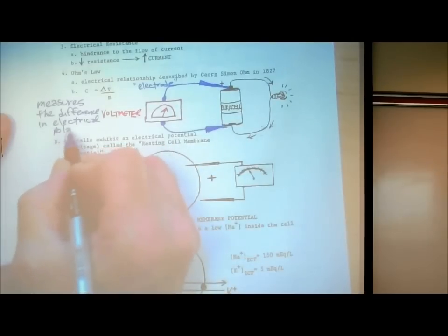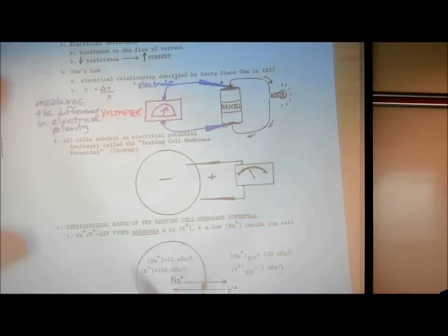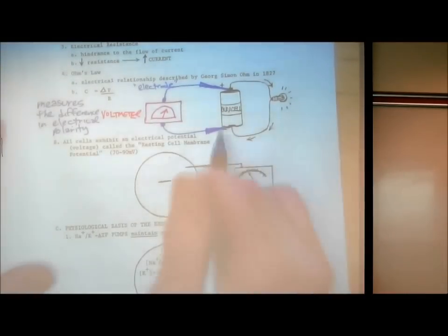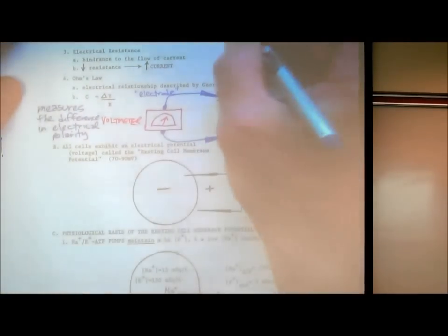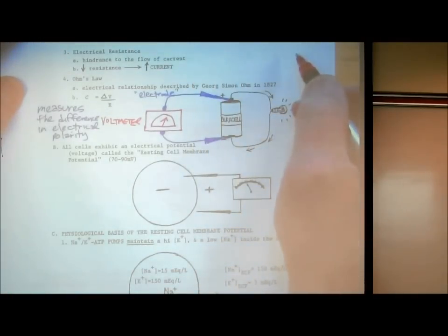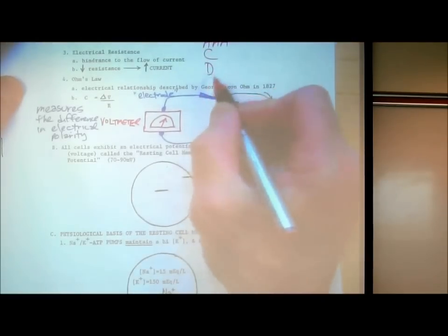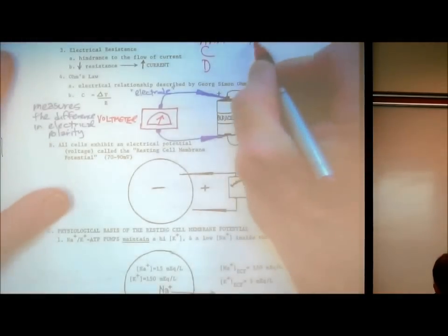Another way of saying that is the difference in voltage, the difference in electrical potential. Does anybody know what the normal voltage is of the most common batteries? Whether it's a double-A, triple-A, C, or D — they are all the same voltage. It's 1.5 volts.